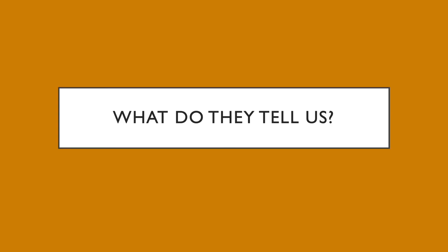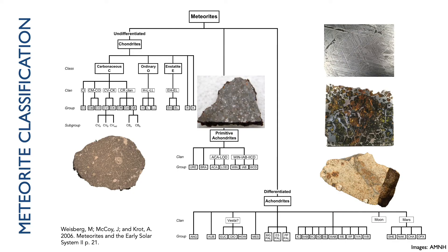So why do we care about meteorites? Different meteorites tell us different things. They're broadly split into three categories: chondrites, achondrites, and primitive achondrites. The figure on this slide is essentially the meteorite family tree. Although it looks complicated, what I want you to take away is that there are a lot of different kinds of meteorites, and if you have a specific question you're trying to answer, you need to know what meteorite to look at.